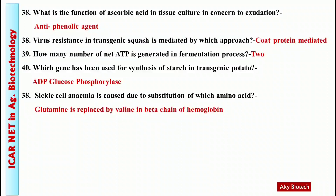Question 42: Sickle cell anemia is caused due to substitution of which amino acid? Answer: Glutamic acid is replaced by valine in the beta chain of hemoglobin.